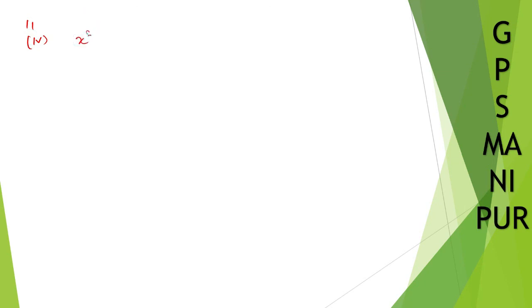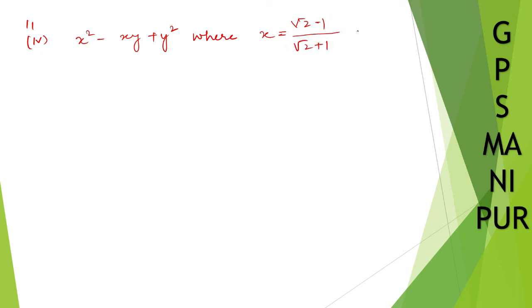Welcome. We have the last question of this chapter — Number System, Exercise 1.3, Question 11, Roman number 4. The question is: x squared minus x y plus y squared, where x is equal to (√2 minus 1) divided by (√2 plus 1), and y is equal to (√2 plus 1) divided by (√2 minus 1).